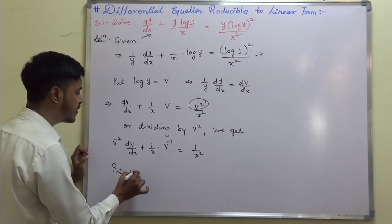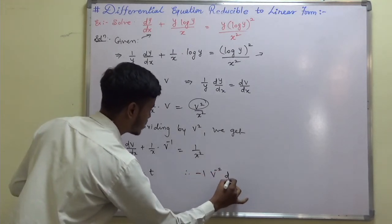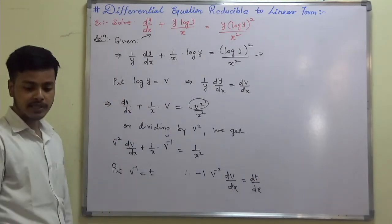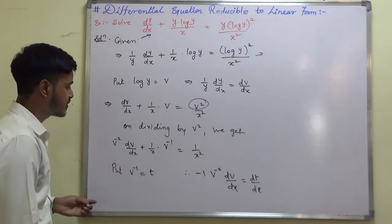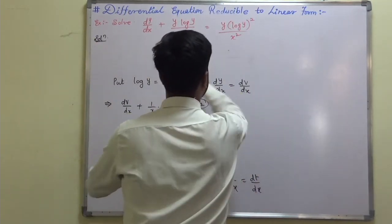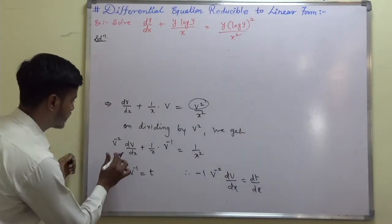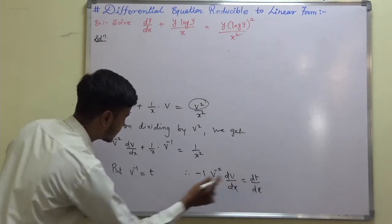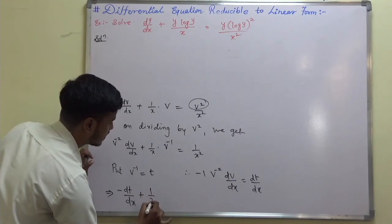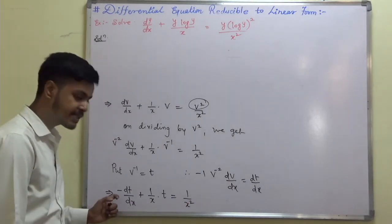Put v⁻¹ equals t. Therefore, minus v⁻²·dv/dx equals dt/dx. Substituting into the equation: minus dt/dx plus (1/x)·t equals 1/x². Multiplying throughout by minus one gives dt/dx minus (1/x)·t equals minus 1/x². This is now a linear differential equation.